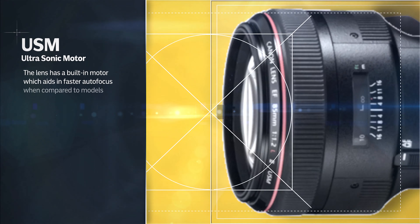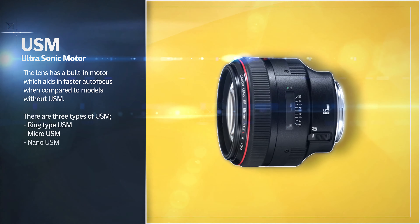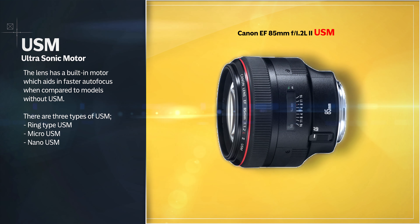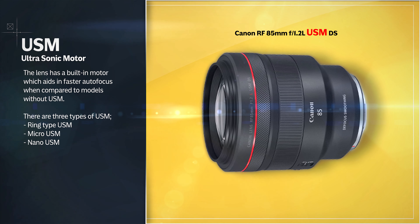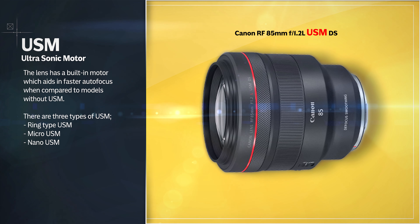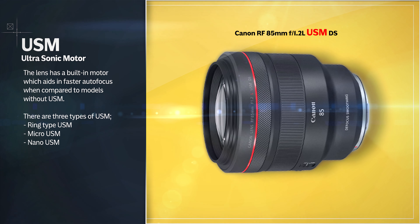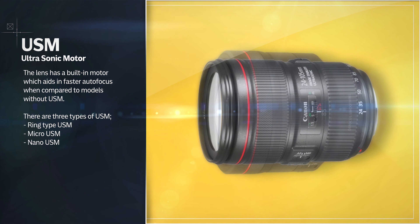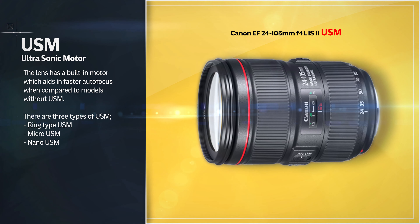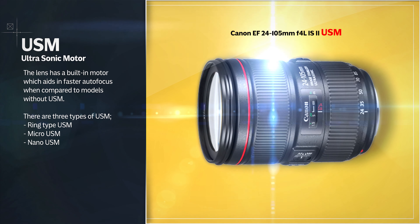USM stands for Ultrasonic Motor. The lens has a built-in motor which aids in faster autofocus when compared to models without USM. There are three types of USM: Ring type USM, Micro USM, and Nano USM.